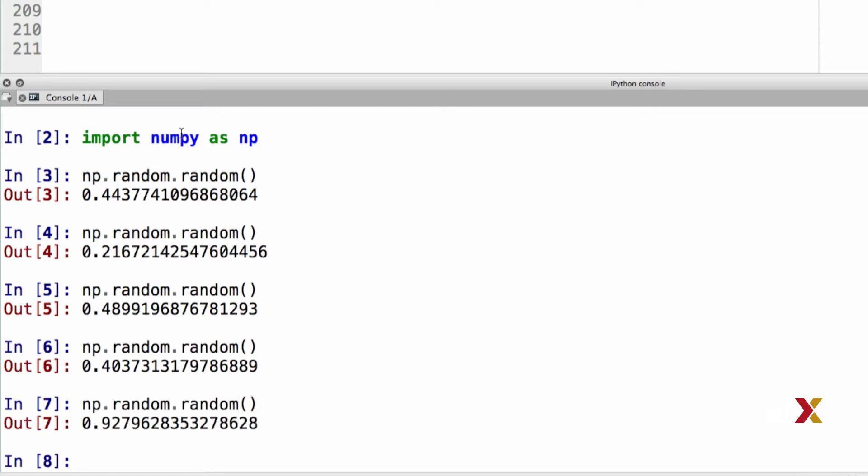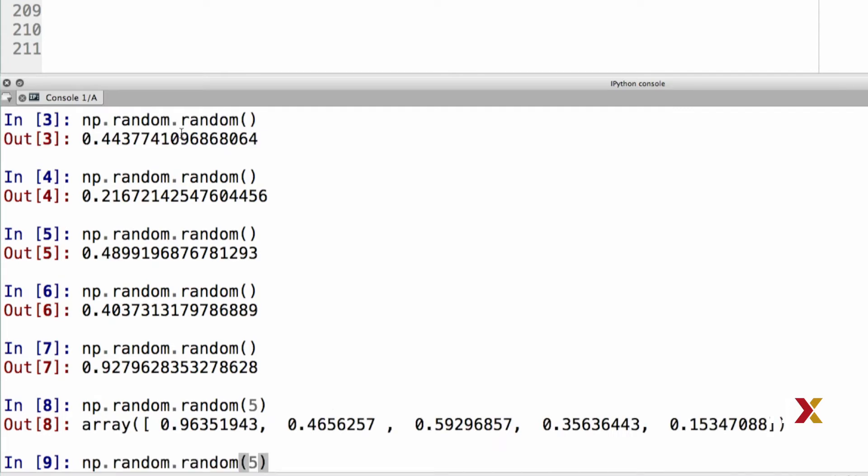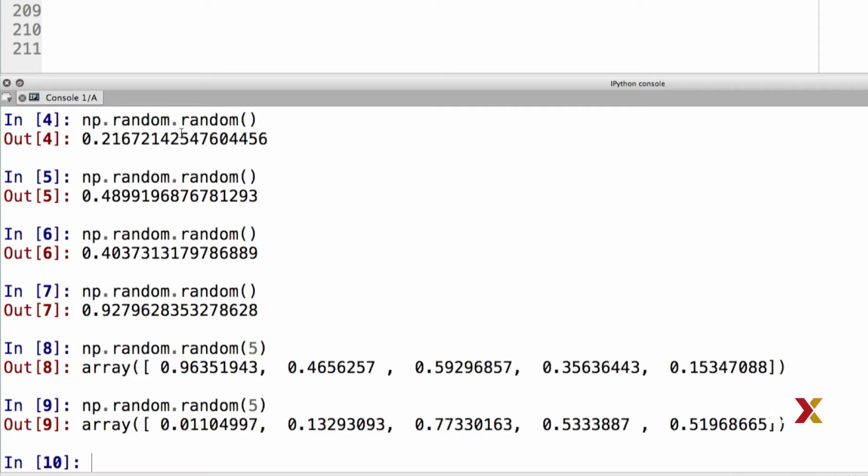We can use the same function to generate multiple realizations or an array of random numbers from the same distribution. If I wanted to generate a 1D array of numbers, I will simply insert the size of that array, say 5 in this case, and NumPy generates 5 random numbers drawn from the 0, 1 uniform distribution.